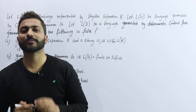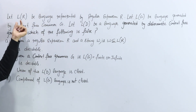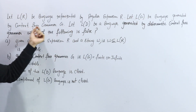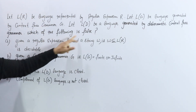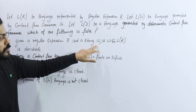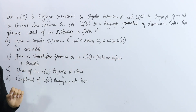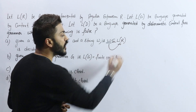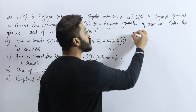Hello friends, welcome to GatesMeshers. Today's question is from TOC. Let's read the statement first. Let LR be a language represented by a regular expression R, LG be a language generated by a context-free grammar G, and LD be a language generated by a deterministic context-free grammar. Given a regular expression R and a string W, is W belongs to LR decidable or not? This is the concept of the membership algorithm.